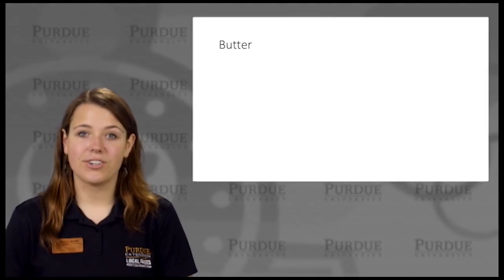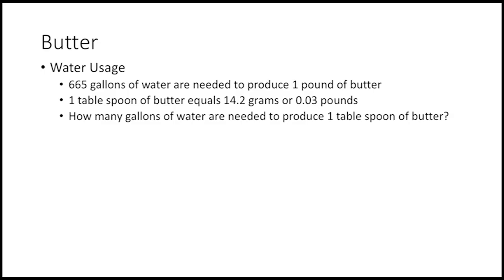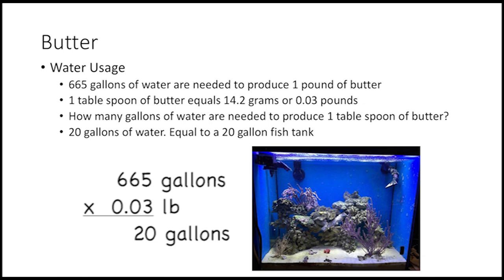Now let's talk about the butter for your toast. 665 gallons of water are needed to produce one pound of butter. One tablespoon of butter equals 14.2 grams, or 0.03 pounds. How many gallons of water are needed to produce one tablespoon of butter? 20 gallons of water — that's equal to one 20-gallon fish tank.